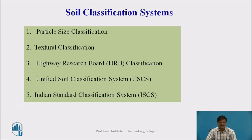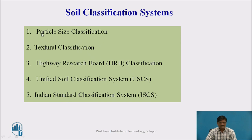There exist many soil classification systems. The first one is the particle size classification, wherein the classification is made based on the particle size. The second one is the textural classification, based on the texture of the soil. The third one is the Highway Research Board, HRB classification — it's a British system. The fourth one is the Unified Soil Classification System, and the fifth one is the Indian Standard Classification System. We will focus on the Indian Standard Classification System, but prior to that we will also discuss classification based on particle size.